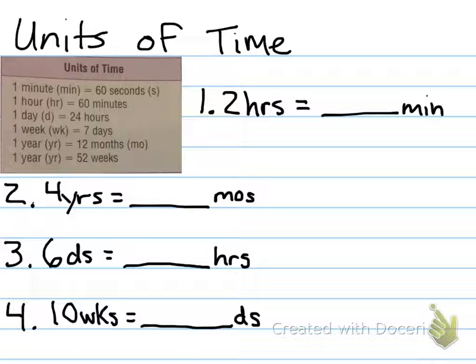This is what we need to write down, right, this nice little key right here that tells us all the units of time we'll be using. So, one minute is 60 seconds. You probably know a lot of these. This might be a little bit of a review. An hour is 60 minutes, a day is 24 hours, a week is 7 days, a year is 12 months, and a year is also equivalent to 52 weeks.